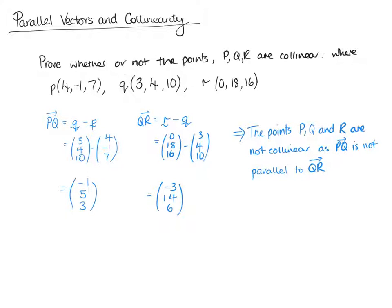So just a reminder: the point of this topic is looking at parallel vectors. If they're a multiple of each other — if you can take out a factor and get the same vector — then they are parallel. And if there is a point in common between two vectors that are parallel, then they are collinear. If you've got any questions, feel free to leave a comment and I will get back to you. And that's us for parallel vectors and collinearity.